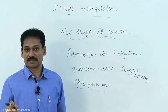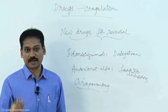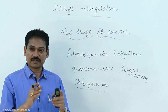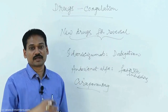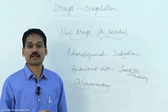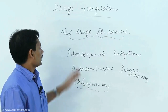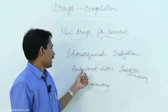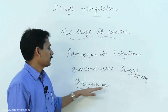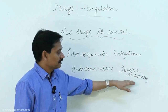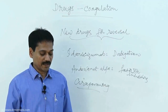Remember, fondaparinux still does not have a specific antidote. Protamine can fully reverse high molecular weight heparin, partially reverse low molecular weight heparins, but cannot reverse fondaparinux. In summary: idarucizumab is specific for dabigatran, andexanet alfa is specific for factor Xa inhibitors, and ciraparantag covers dabigatran, Xa inhibitors, as well as high and low molecular weight heparins.